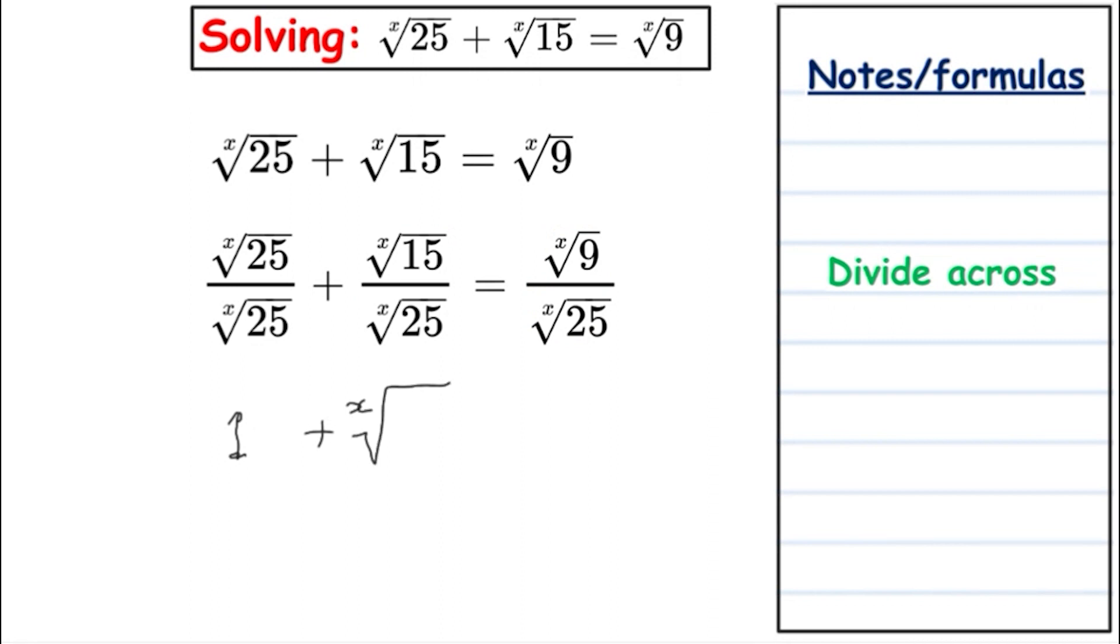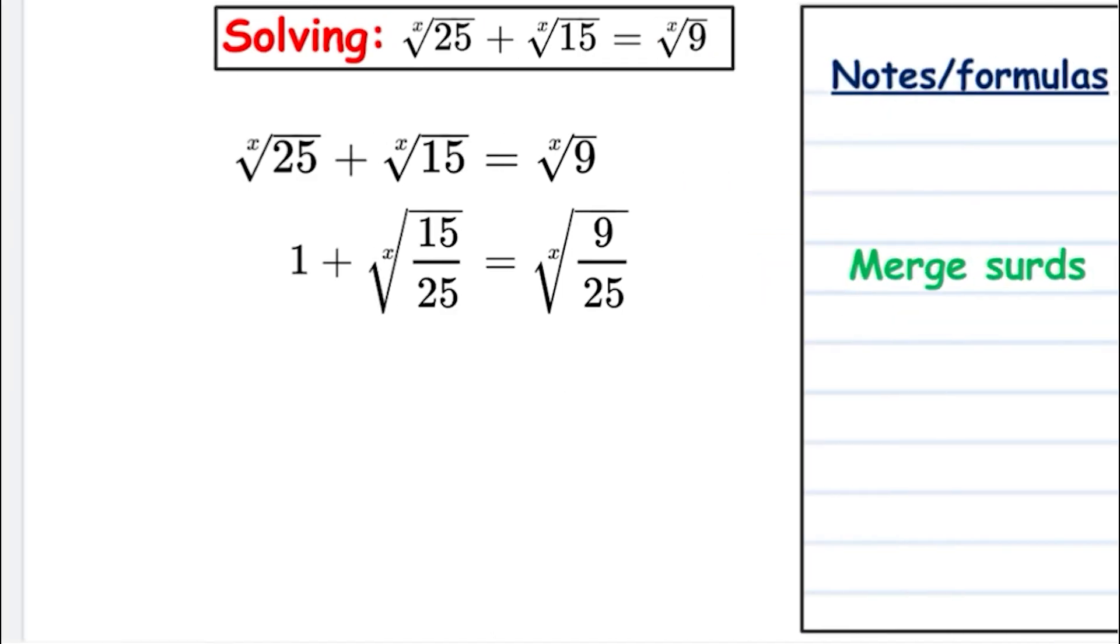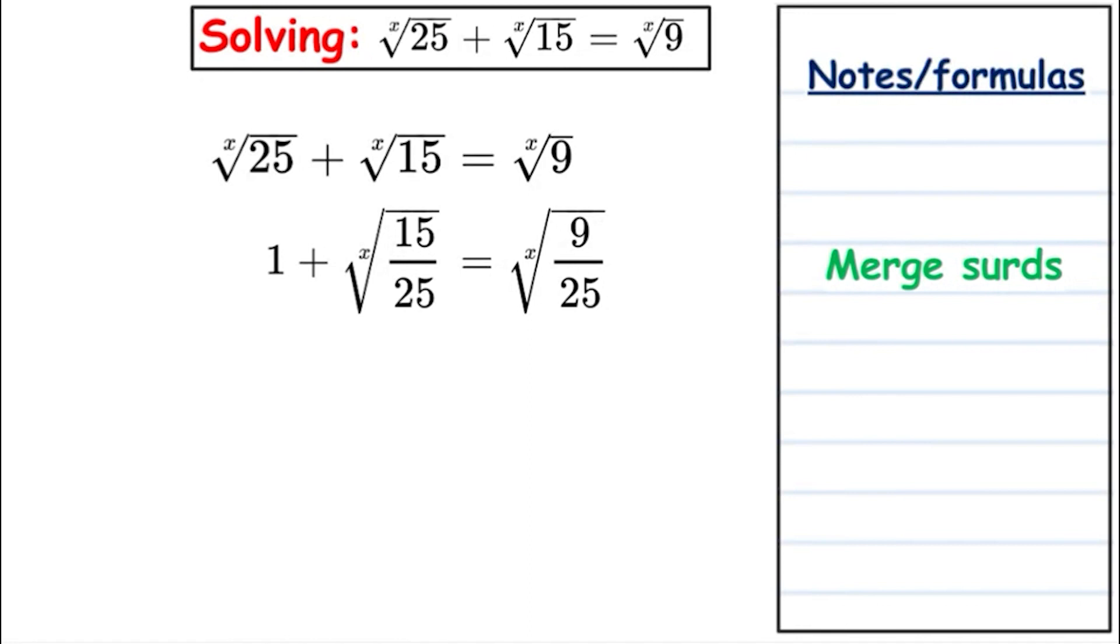We can go with the x root of 15 over 25 as a separate fraction inside, and then we have 9 over 25. Now that we have them merged, let's simplify inside with the fractions. We have 25 as the denominator and 15 and 9. If we divide above and below by 5, we will get 3 over 5. And for the 9, we have 3 squared over 5 squared, which is the same as 9 over 25.